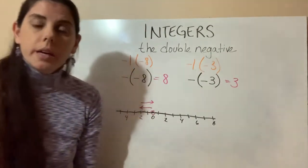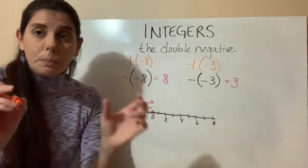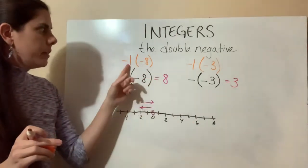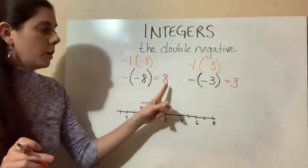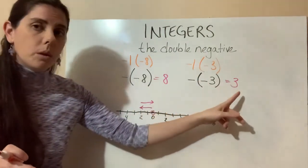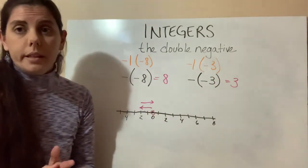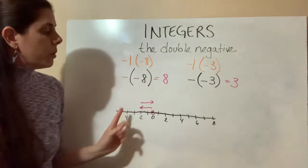And one of the rules in integers that you'll see later on in this chapter is if you multiply two negatives, you get a positive. So a negative one times a negative eight would equal a positive eight. A negative one times a negative three would equal a positive three.